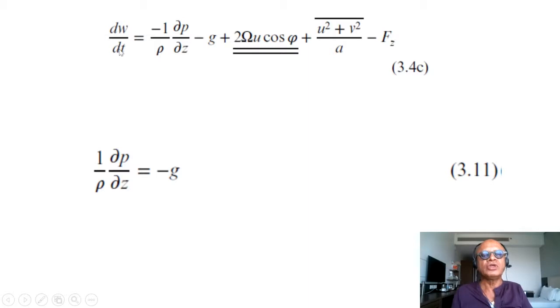Looking again at the hydrostatic assumption, we took the vertical momentum balance equation: dw/dt - 1/ρ dp/dz minus the gravitational force, the geometric term, and the dissipation. We reduced it basically to 1/ρ dp/dz = -g, so the pressure gradient force is balancing the gravitational force. This has interesting consequences - for example, if you take surface pressure and integrate all the way to the top where pressure goes to zero, you can actually estimate the mass of the atmosphere.